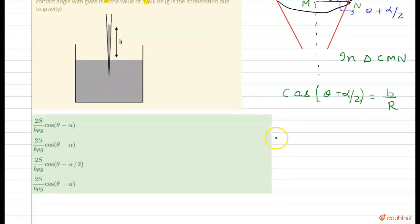And we know that p_naught minus 2s by r plus h rho g is equals to p_naught.